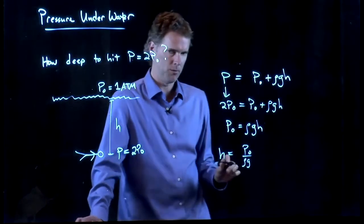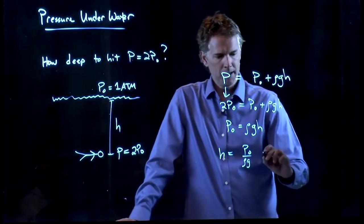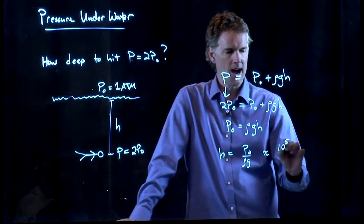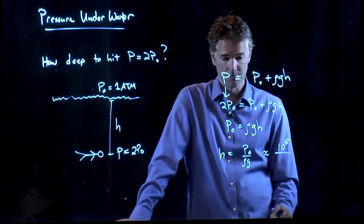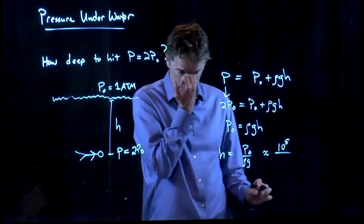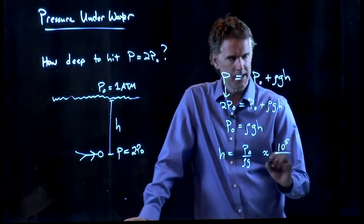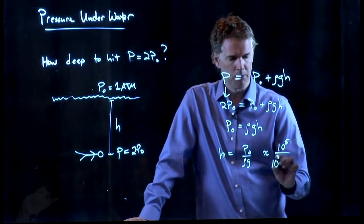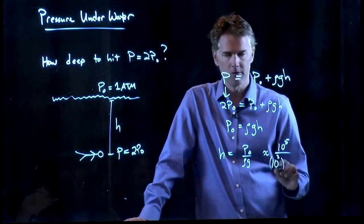h is p-naught over rho g. What is p-naught? Well, it's 1 atmosphere, which is 10 to the 5 pascals. Rho is the density of water, which is around 10 to the 3 kilograms per cubic meter.